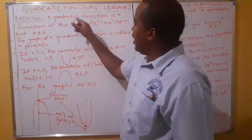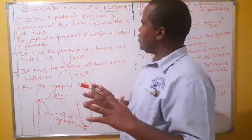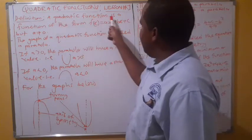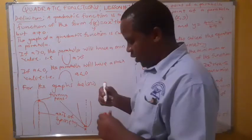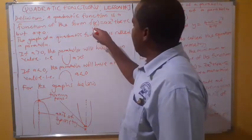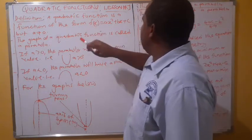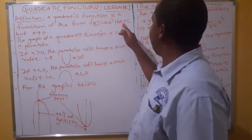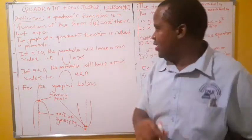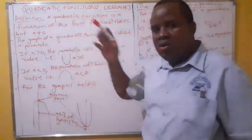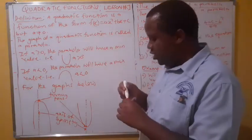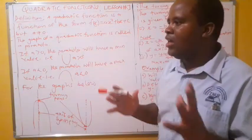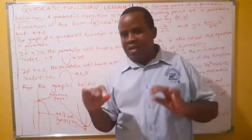A quadratic function comes from the quadratic equation — we have previous lessons on quadratic equations on our YouTube channel. A quadratic function is a function of the form f(x) = ax² + bx + c, where a, b, and c are constants. For it to be a quadratic function, a must not be equal to zero. We call it a quadratic function because the highest degree is two, and it is expressed as f(x), making it a function rather than an ordinary quadratic equation.